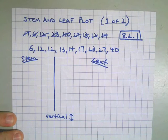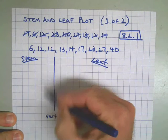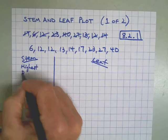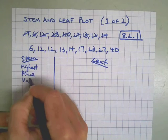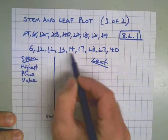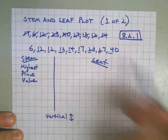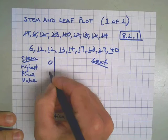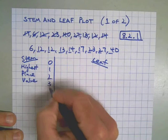Now on the stem side, we want to put the highest place value in all of our set of numbers. In this case, the highest place value is the tens place. So we've got 0, 1, 2, 3, 4.